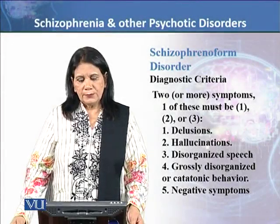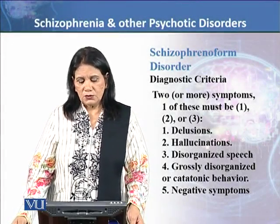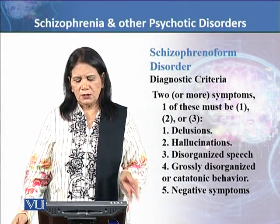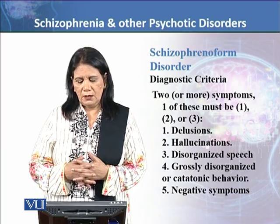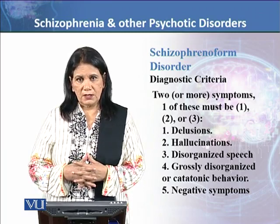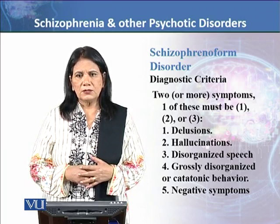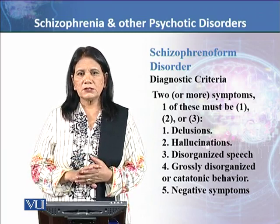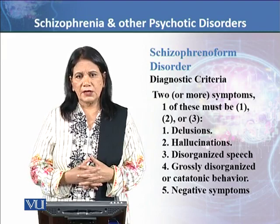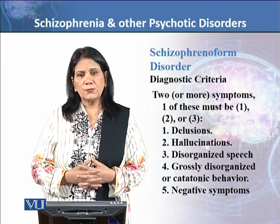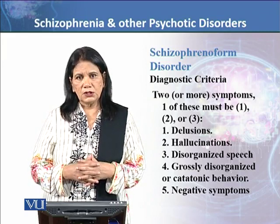The next type of disorder is schizophreniform disorder. As the name indicates, it is a type of schizophrenia, but it is different from schizophrenia. These distinctions are very important for a clinician, clinical psychologist, psychiatrist, or mental health professional who needs to make a diagnosis.